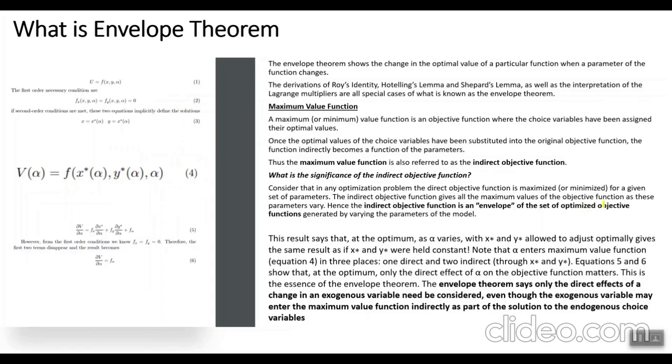So your indirect objective function is an envelope of the set of optimized objective functions generated by varying the parameters of the model.